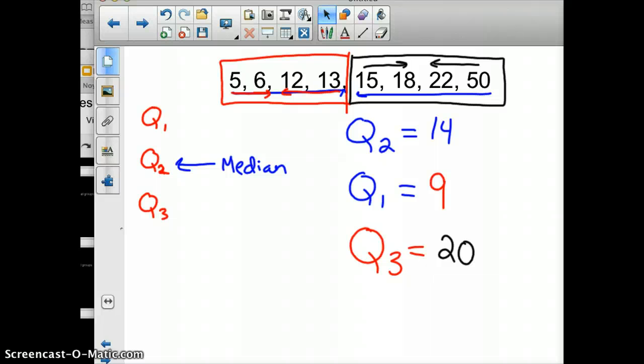Anything below a 14 is in the lower half of your data. Anything above 14 is in the upper half of your data. Anything below a 9 is in the first quarter of your data, and anything above 20 is in the last quarter of your data.